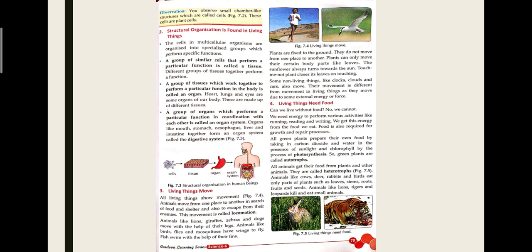The second characteristic is structural organization found in living things. Living things are made up of multiple cells grouped in a specialized form to perform a specific function. All cells together make tissue, tissues together make an organ, and organs coordinate with each other to make an organ system. See Figure 7.3.